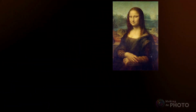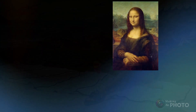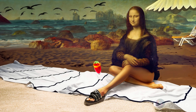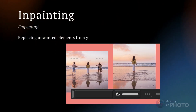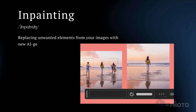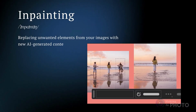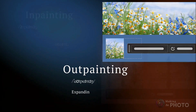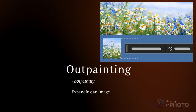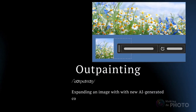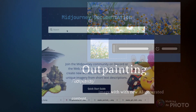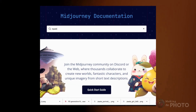The web has been going crazy — giving the Mona Lisa legs, changing backgrounds, and redressing models. Inpainting and outpainting aren't new to AI image generation. Inpainting is replacing unwanted elements in your image with new AI-generated content. Outpainting is expanding an image with new AI-generated content. These are just the tools we've been waiting for in Midjourney.